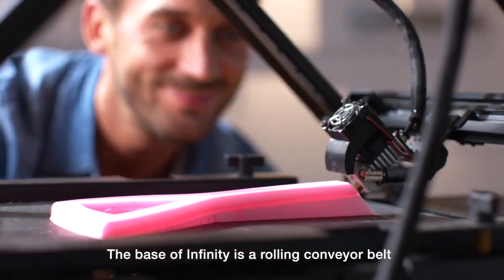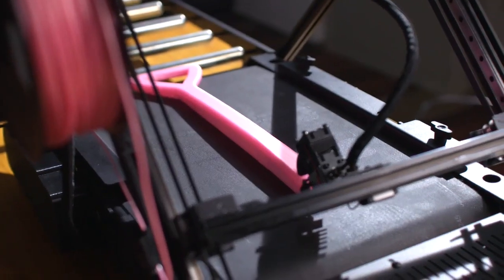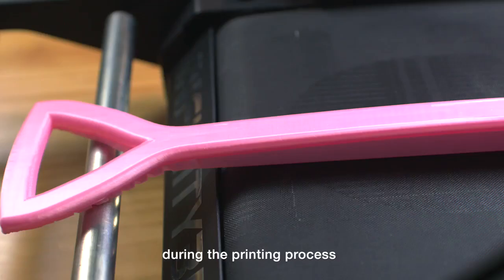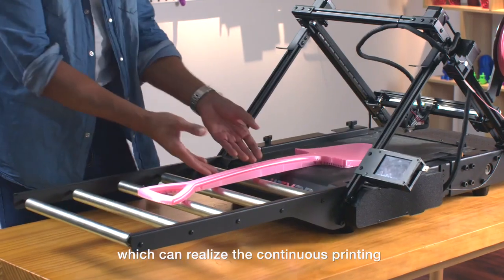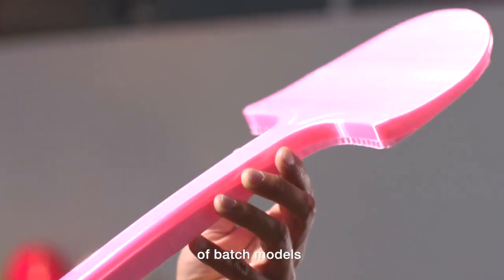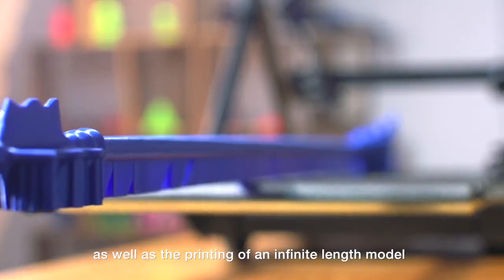The base of Infinity is a rolling conveyor belt. The conveyor belt gradually rolls during the printing process, which can realize the continuous printing of batch models, as well as the printing of an infinite length model.